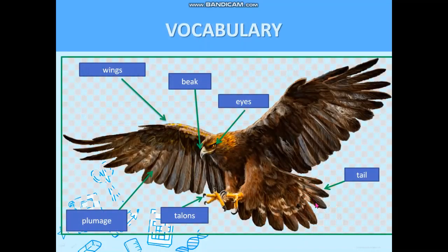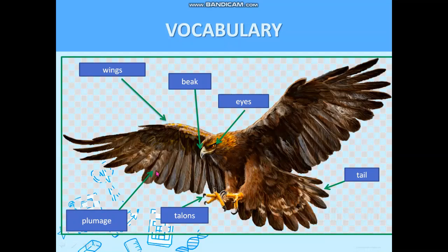Now let's continue with some new vocabulary. Here on the screen you can see six new words. Let's read them together: wings, beak, eyes, tail, talons, plumage.